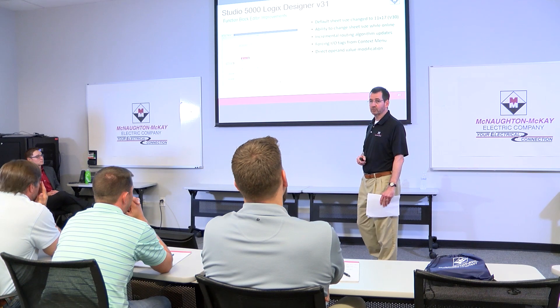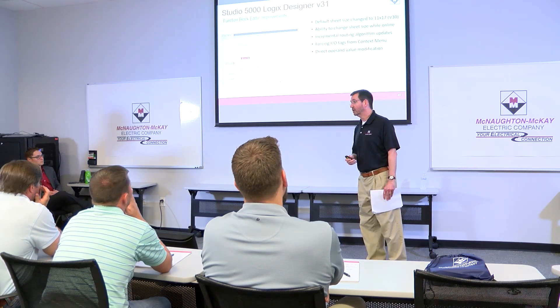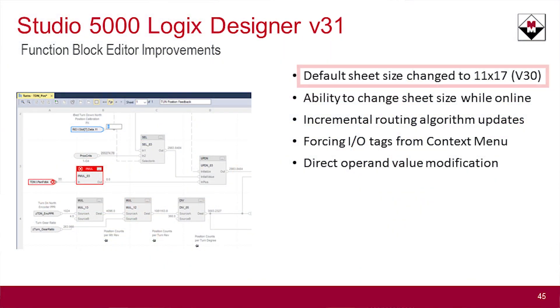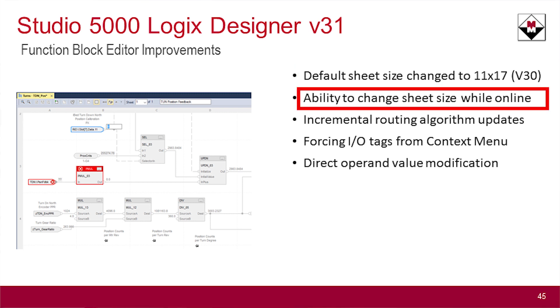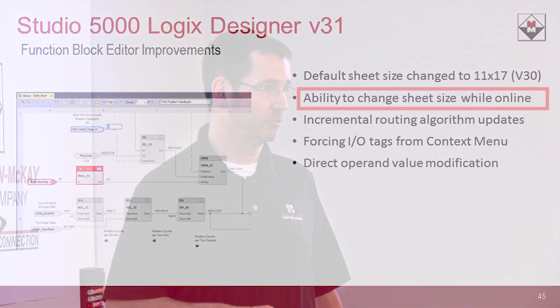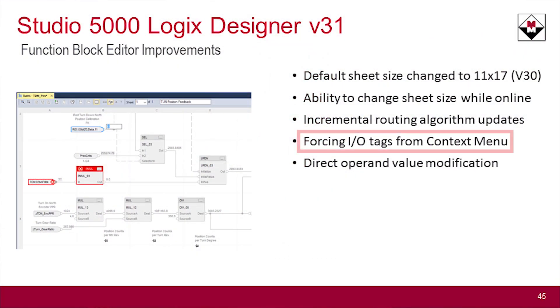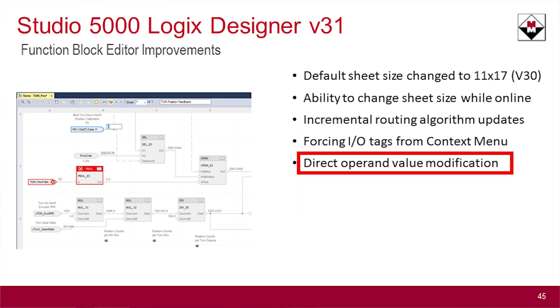The function block editor also has several improvements. The default screen has been changed to 11 by 17, and they're allowing you to change the screen size online as well. Previously you had to take it offline to change it, but now you can do that online. You can also force IO tags directly from the sheets, as well as change operands directly there.